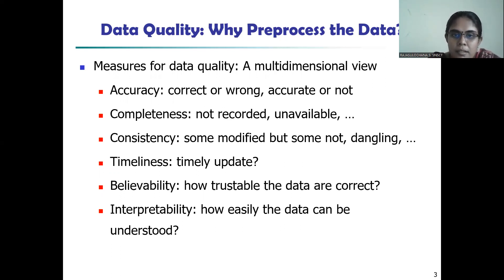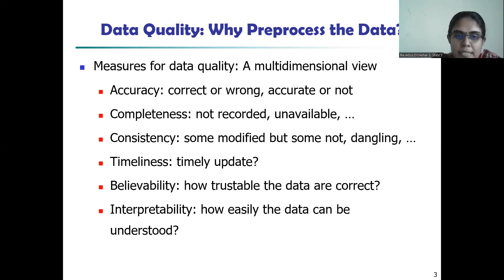There should not be any empty or null values for a given attribute — that measures completeness. By means of consistency, if you have made any changes to an attribute, it should be reflected in the dataset. By means of timeliness, the data should be made available for analysis at the correct time. For example, if you want to calculate the monthly bonus for a sales employee and the manager fails to update the sales count on time, it is not possible to calculate the monthly bonus.